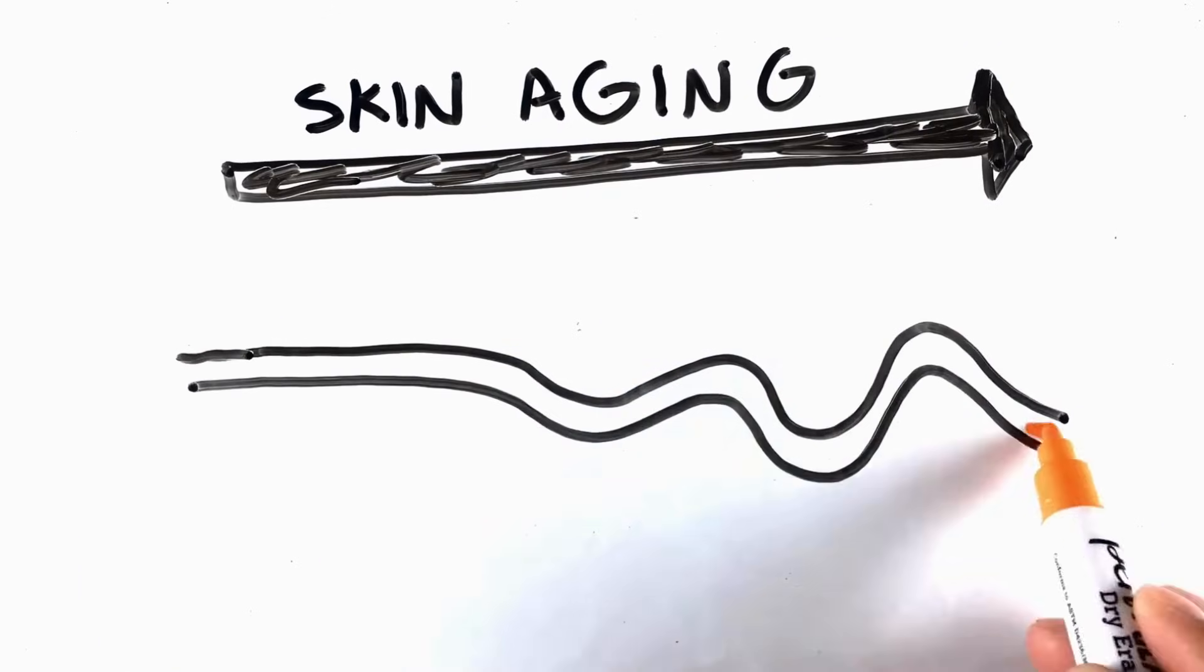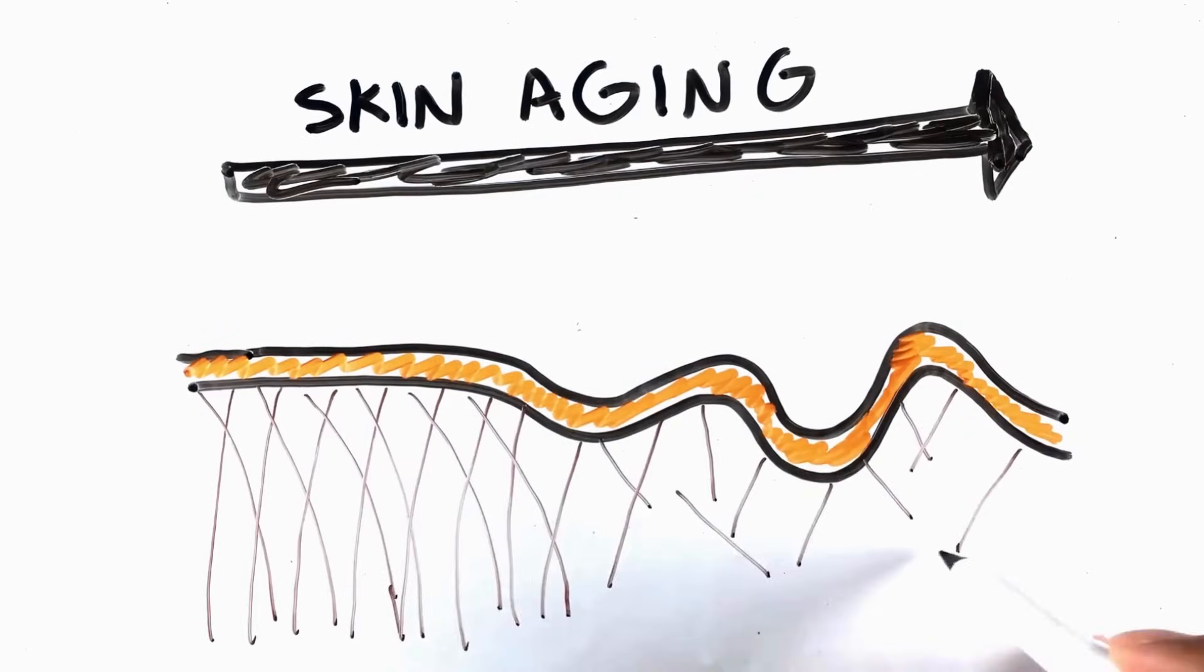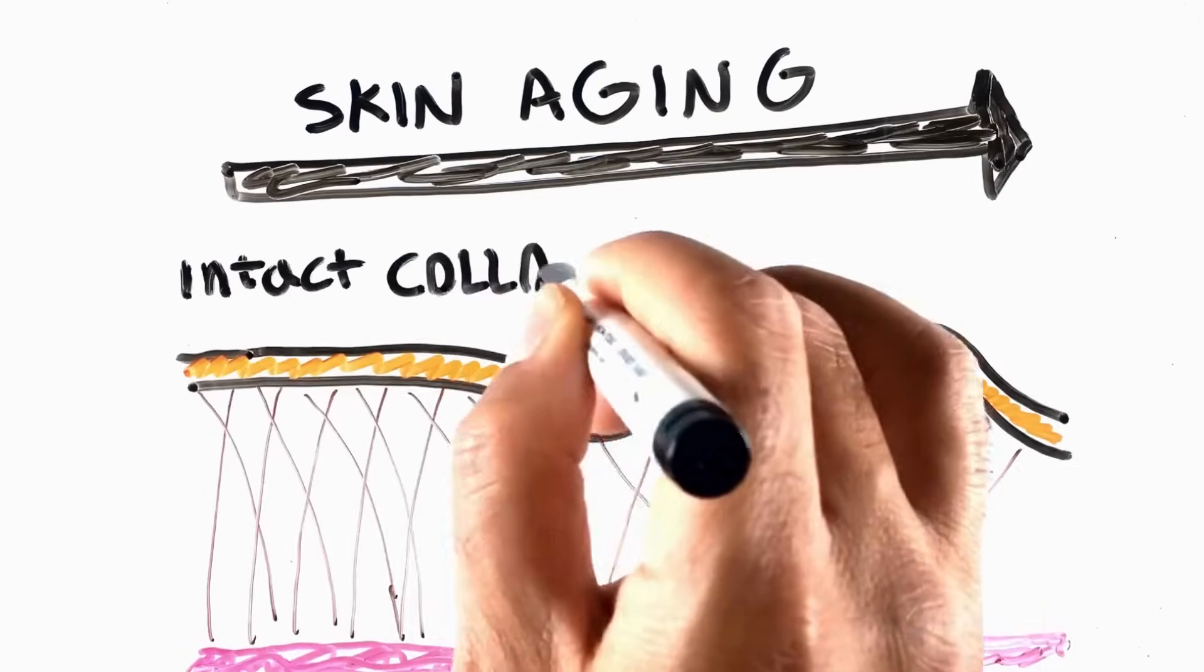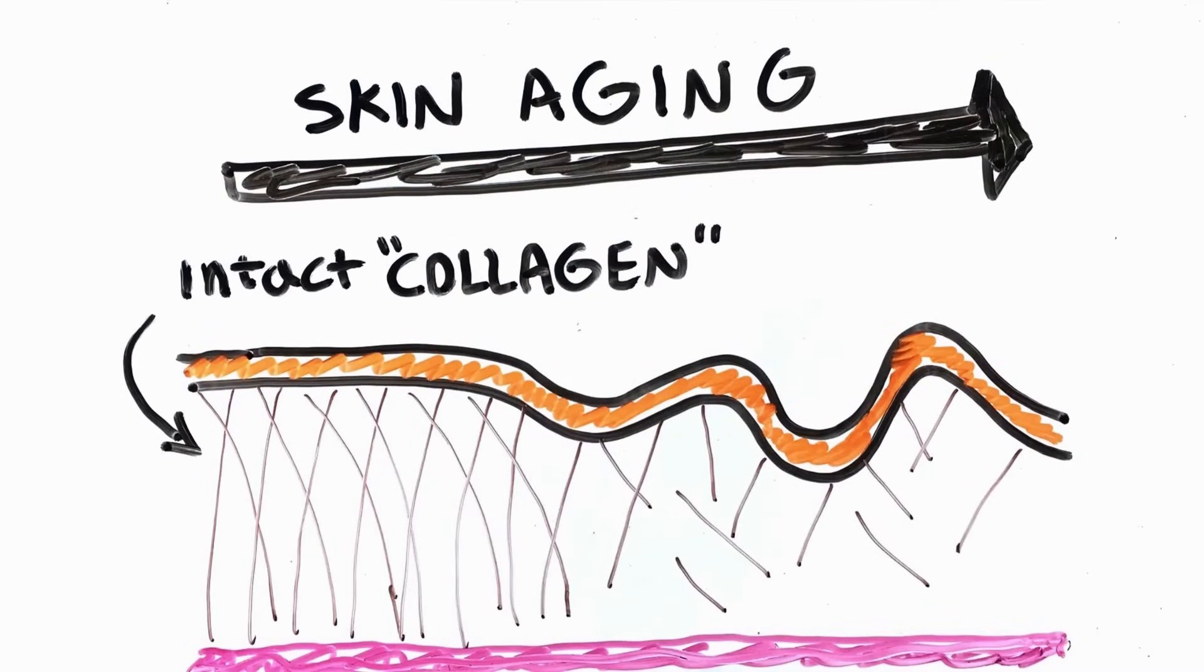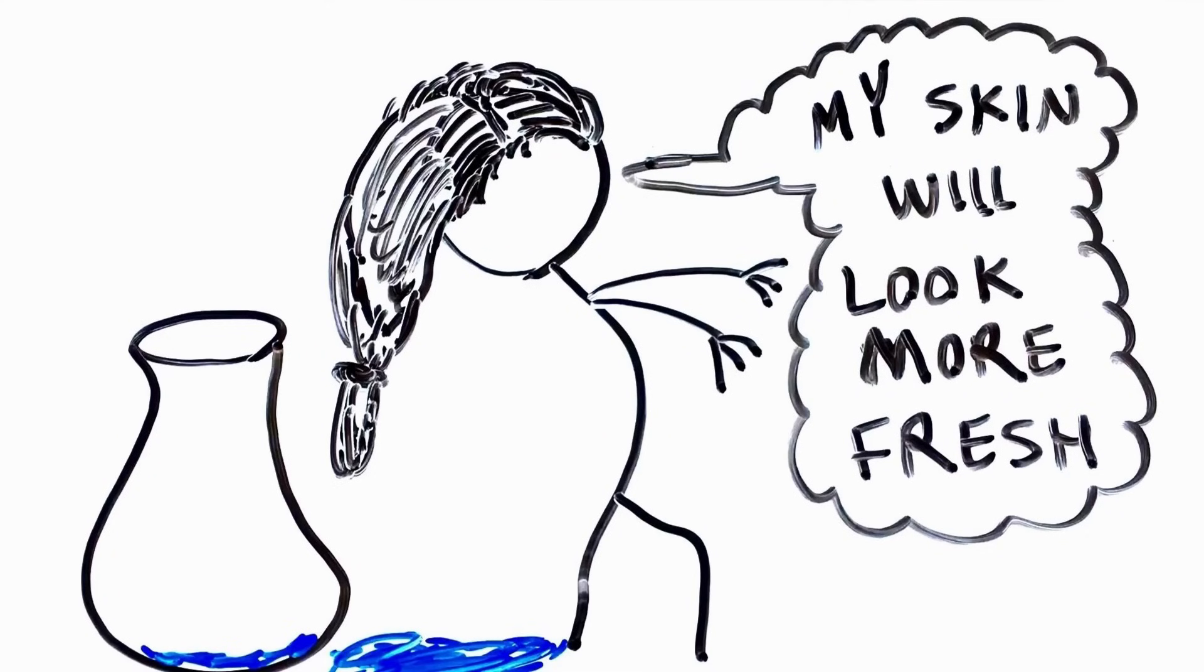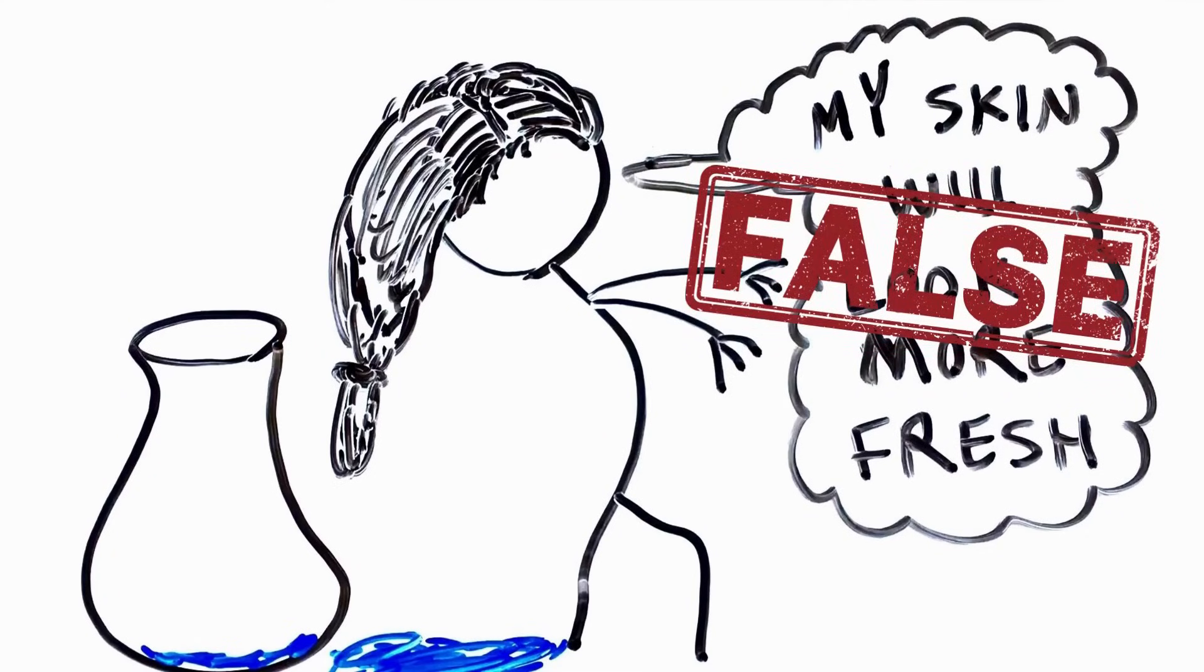As we age, the skin loses density because of collagen and elastin breakdown. That's why wrinkles will show up. Also, the skin cannot retain moisture very well, so drinking excess water will not present any positive effect on making the skin wrinkle-free.